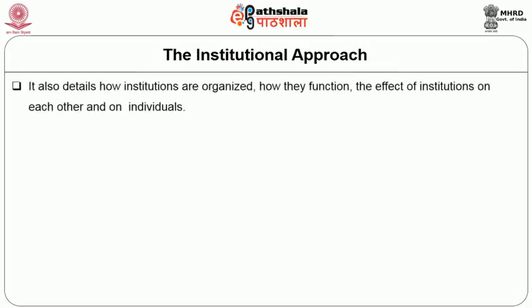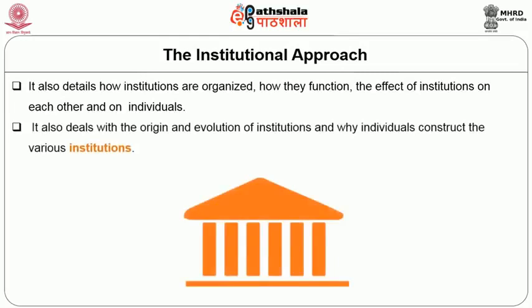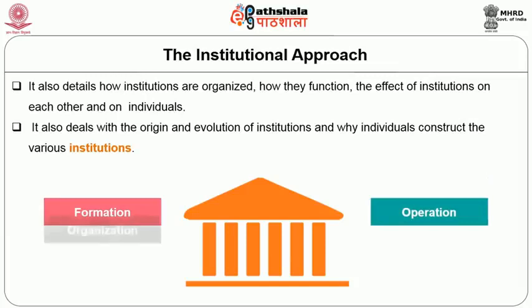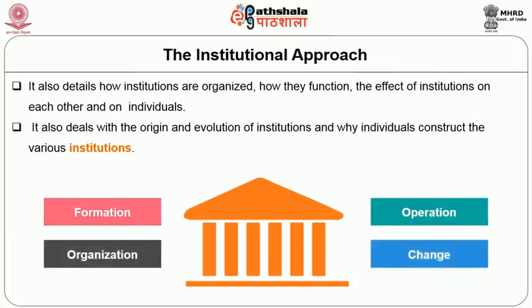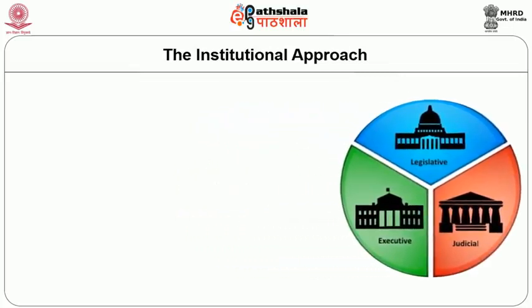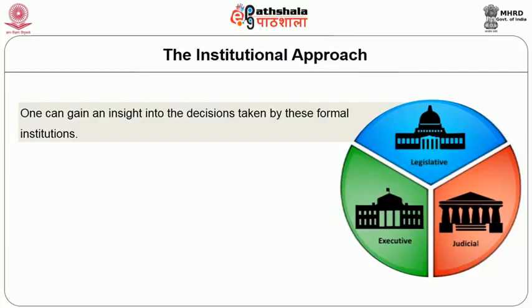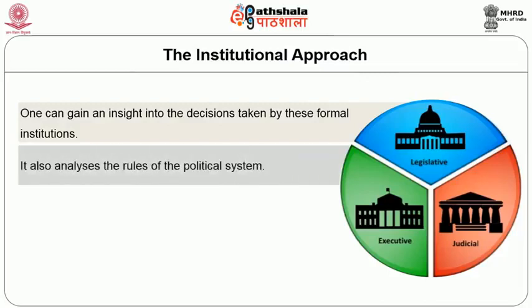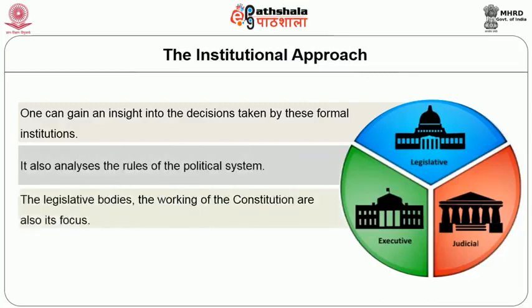It also details how institutions are organized, how they function, and the effect of institutions on each other and on individuals. It also deals with the origin and evolution of institutions and why individuals construct the various institutions. Institutions, their formation, operation, organization and change are studied. The three branches — legislature, executive and judiciary — have to be studied so that one can gain an insight into decisions taken by these formal institutions. It also analyses the rules of the political system, the legislative bodies, and the working of the constitution.